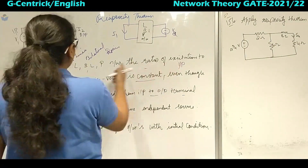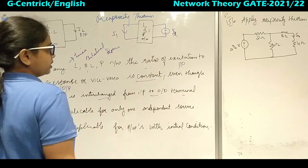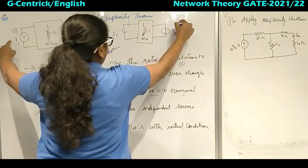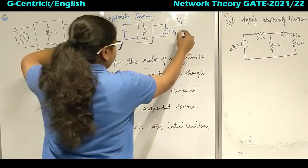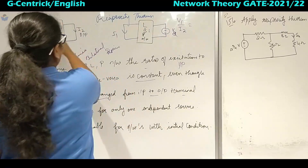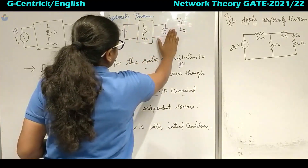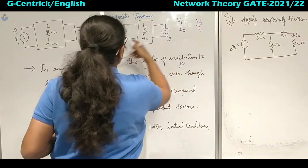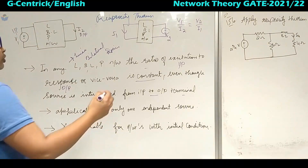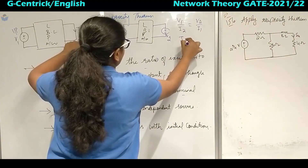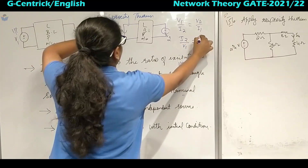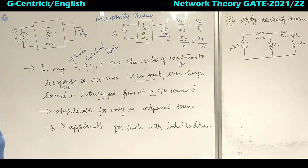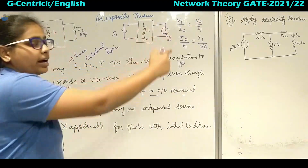What type of ratio? Excitation to response or response to excitation. So from excitation to response: excitation is V1 divided by response I2, and it will be equal to — when interchanged — V2 divided by the response. You can also write it as response to excitation equal to response to excitation. This ratio will always be constant even though they are interchanged.